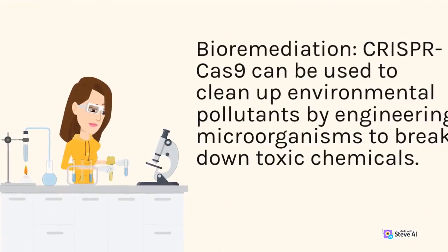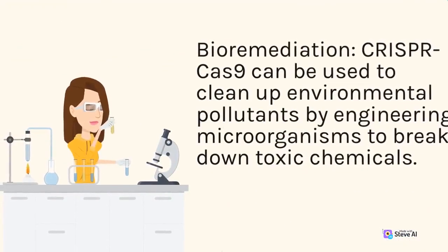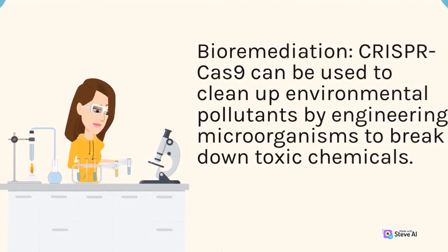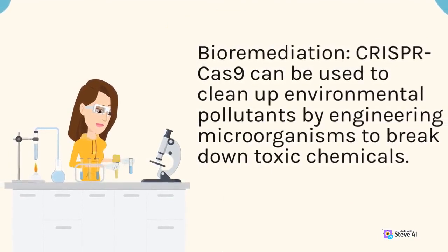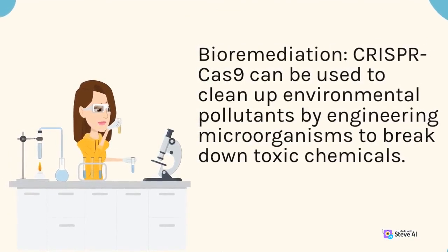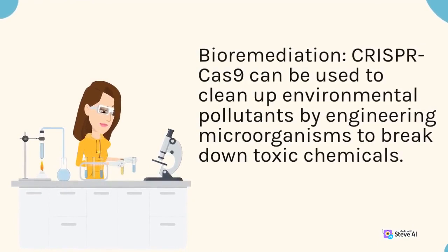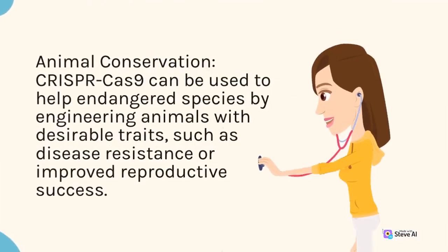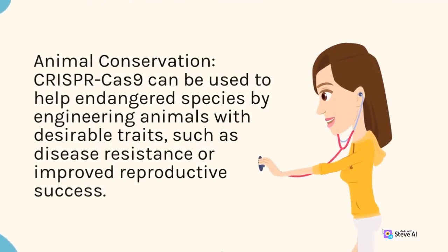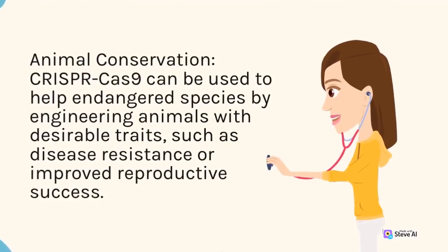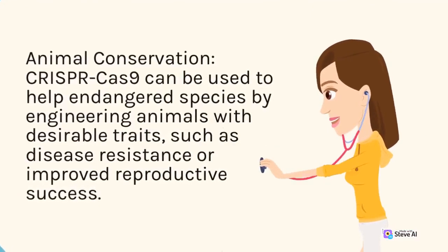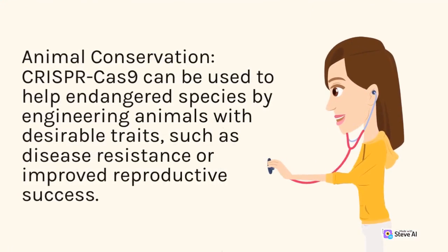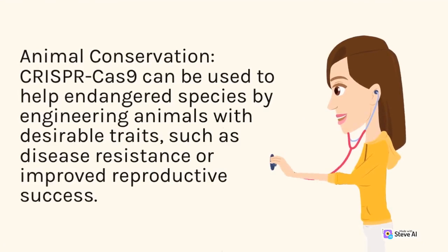In bioremediation, CRISPR-Cas9 can be used to clean up environmental pollutants by engineering microorganisms to break down toxic chemicals. In animal conservation, CRISPR-Cas9 can be used to help endangered species by engineering animals with desirable traits, such as disease resistance or improved reproductive success.